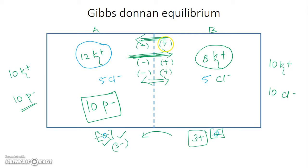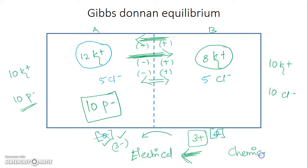At the point when the electrical gradient pushing potassium from B to A becomes equal to the chemical gradient pushing potassium from A to B, there is no net movement of potassium ions. There will be movement, but no net movement — one ion moves from A and one is pulled back by the electrical gradient. Both gradients are equal and opposite in strength, creating an equilibrium with both an electrical and a chemical gradient.